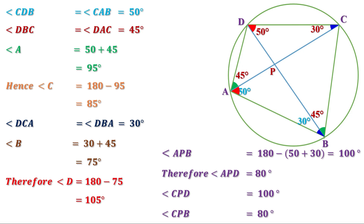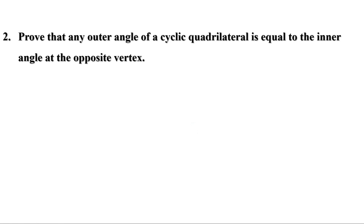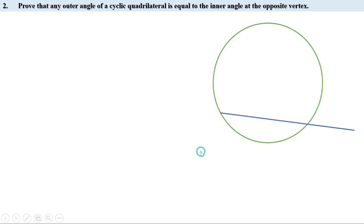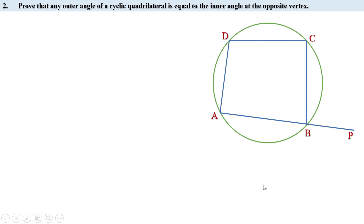Today let us do the remaining problems on page 59. Prove that any outer angle of a cyclic quadrilateral is equal to the inner angle at the opposite vertex. First, let us draw a cyclic quadrilateral and one of its outer angles. We have to prove that the outer angle equals the inner angle at the opposite vertex. In this figure, ABCD is a cyclic quadrilateral and angle CBP is its outer angle. We have to prove that angle CBP equals angle D.